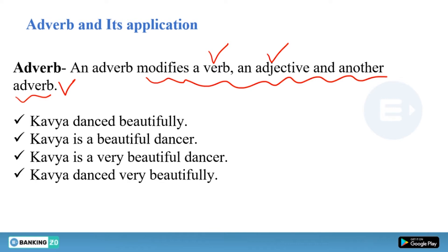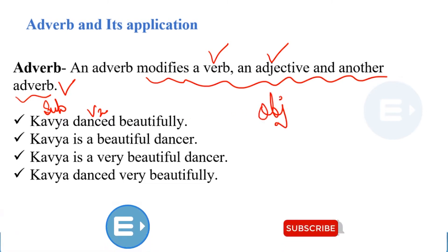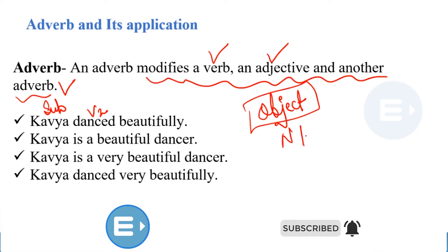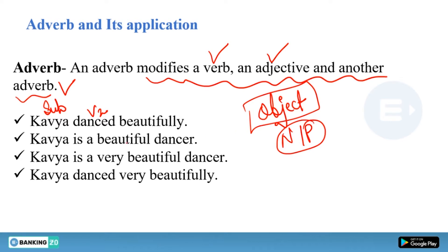We have some examples. The first sentence is: Kavya danced beautifully. Kavya is the subject, danced is the verb. Now what is beautifully? Beautifully is not an object, because a noun or pronoun can be an object, and beautifully is neither. When I ask how Kavya danced, the answer is beautifully. So beautifully is an adverb which qualifies the verb.